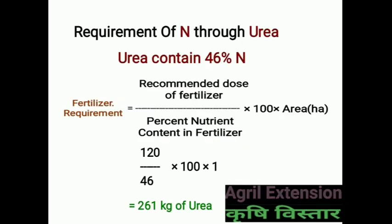For the requirement of Nitrogen through Urea, we know Urea contains 46% Nitrogen. Using the formula, fertilizer requirement equals recommended dose divided by percent nutrient content into 100 into area in hectares. Putting in the values: 120 kg divided by 46, into 100, into 1 hectare. By solving this calculation, you get 261 kg of Urea.